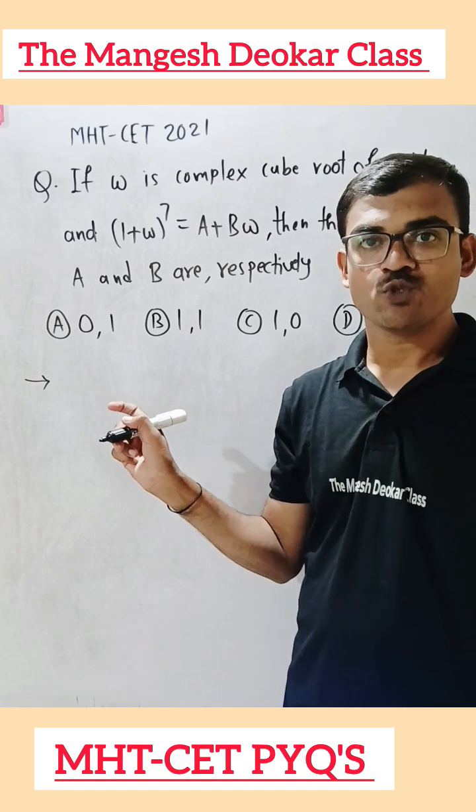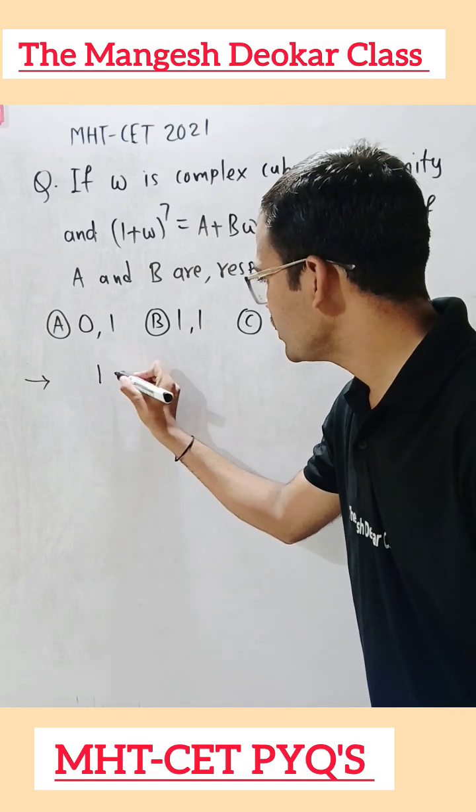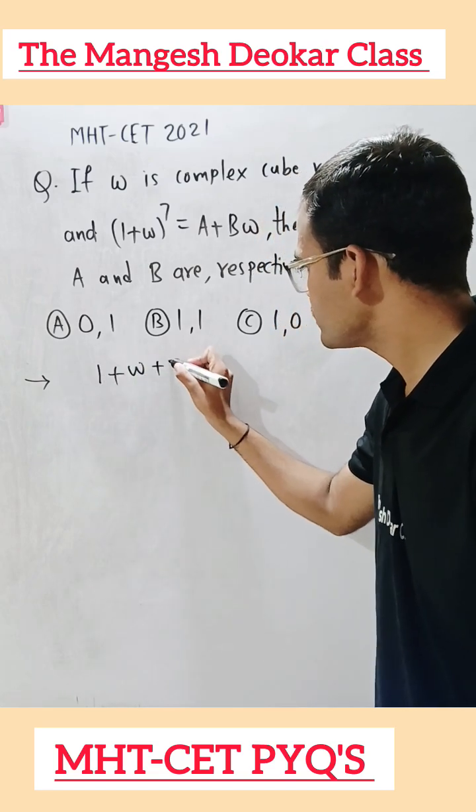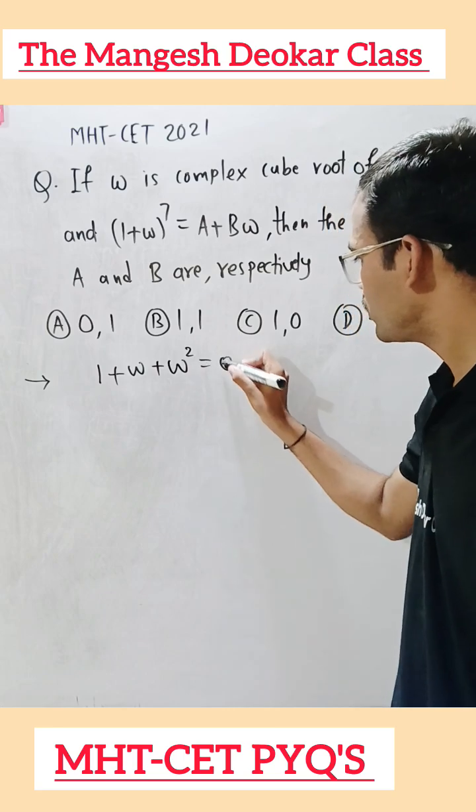ω is a cube root of unity. So we have the relation 1 + ω + ω² = 0.